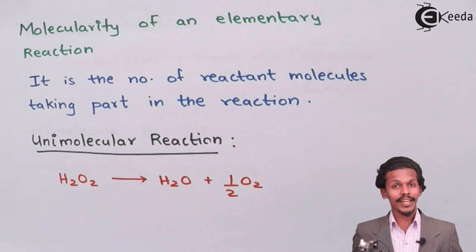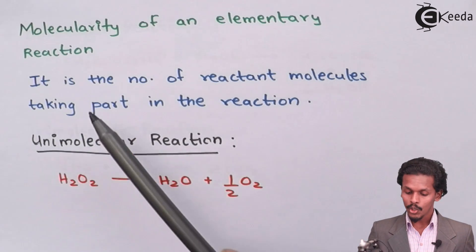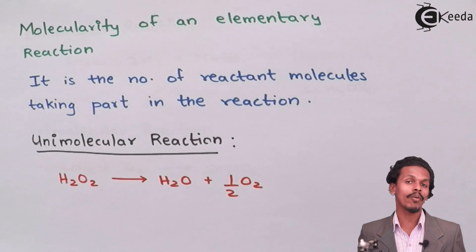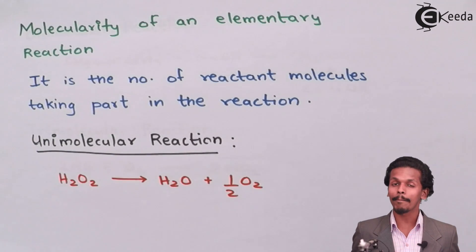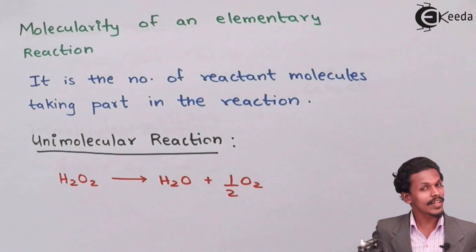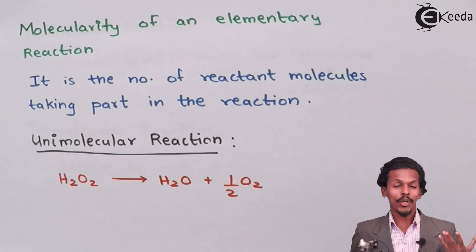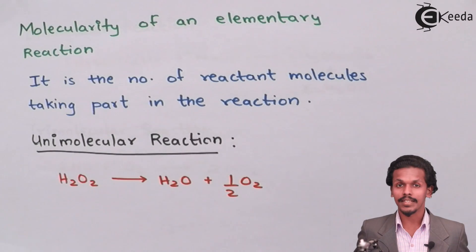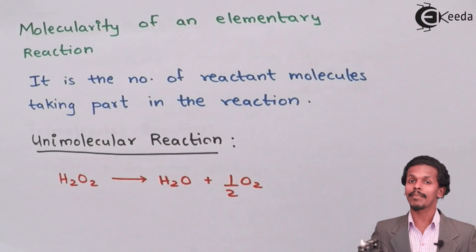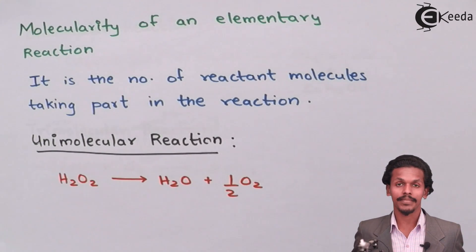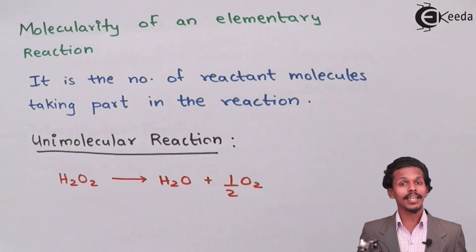The molecularity of a reaction is nothing but the total number of reactant molecules that are involved in the reaction or that are taking part in the reaction. It is very simple to analyze. And the molecularity are of different types. That is unimolecularity, biomolecularity and tri-molecularity reactions. So let us see it one by one.